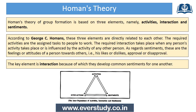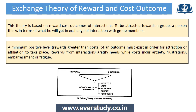It has been observed that interaction helps us to achieve goals and that other problems can be solved through group interaction. The next theory is the Exchange Theory of Reward and Cost Outcome.